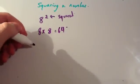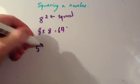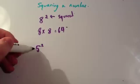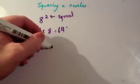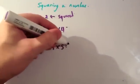If we look at another one, for instance, 5 squared, this is saying you're going to multiply 5 by itself. So you're going to do 5 times 5, which equals 25.